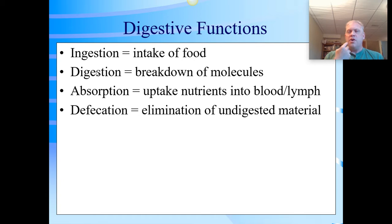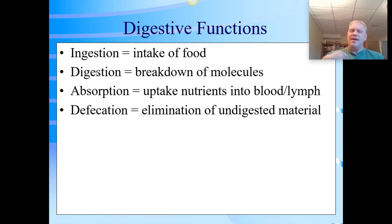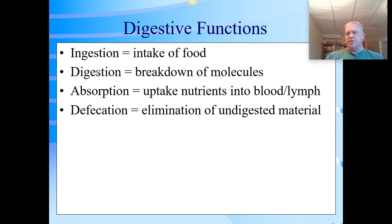Mechanical digestion happens in the mouth — we chew it, move it around, break it down mechanically. It's not a chemical process at all. Another place where mechanical digestion takes place is the stomach, which churns and mixes — it's a big mixing chamber. Then we get into chemical digestion, which takes place in many places throughout the path, starting right within the mouth, continuing a little bit in the stomach, then into the small intestine and large intestine.